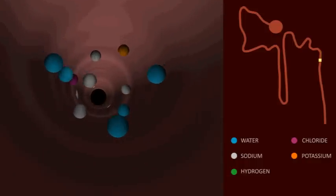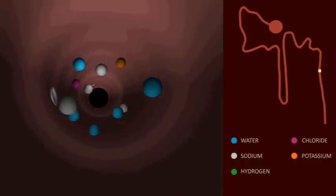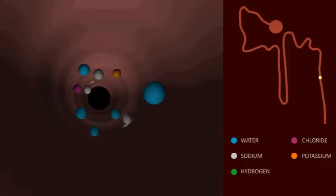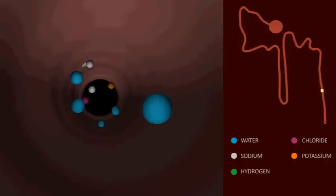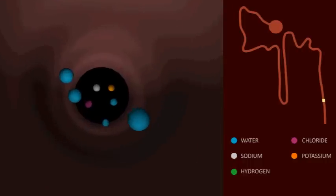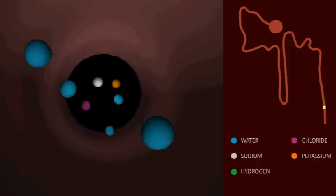The collecting duct is responsible for the fine tuning of sodium reabsorption. The movement of water and sodium from the lumen to the blood are under the regulation of vasopressin and aldosterone, which are released depending on whether the body needs to conserve water and sodium.